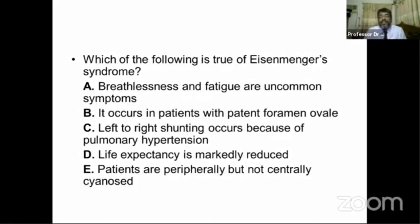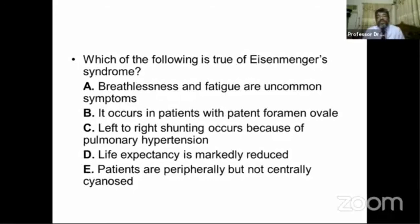Shunting means passage of blood from the left chamber to the right chamber or right to left. When reversal of the shunt occurs — blood passes from the right side to the left side — there is mixing of oxygenated and deoxygenated blood in the left chamber, which is circulated throughout the body. The patient develops cyanosis as well as clubbing. This is called Eisenmenger syndrome.